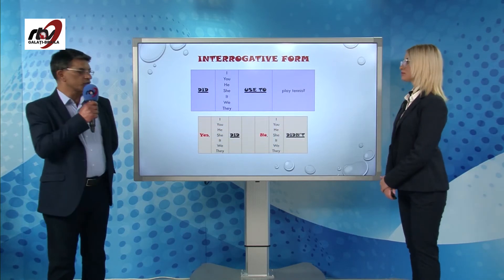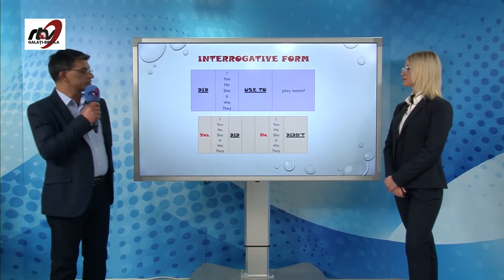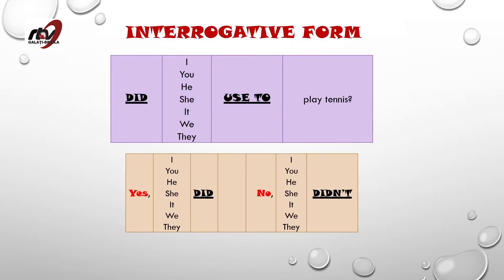And the interrogative form — let's have a look at these examples: 'Did I used to play tennis? Did you used to play tennis? Did he used to play tennis? Did she used to play tennis? Did we used to play tennis? Or did they used to play tennis?'